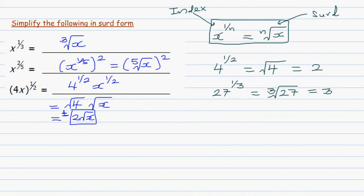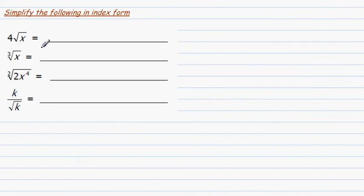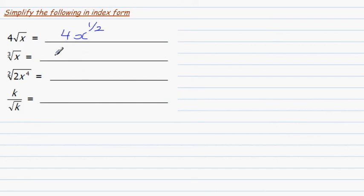Now going backwards — from surd form to index form. 4 times the square root of x means x raised to the half, so this is 4x raised to the half; that is the index form. The cube root of x is the same as writing x to the power 1 over 3.